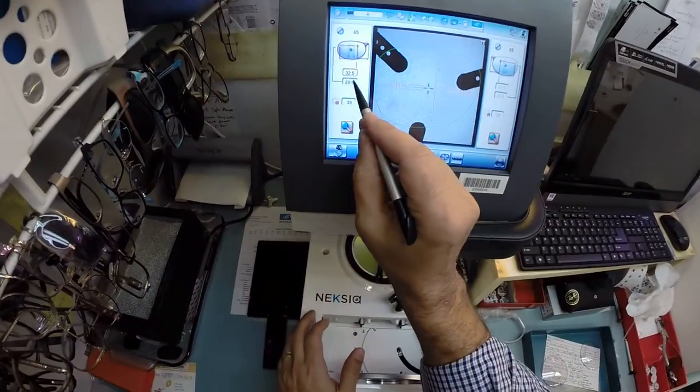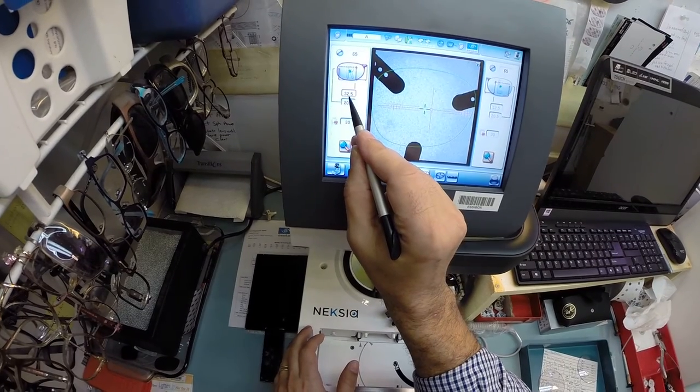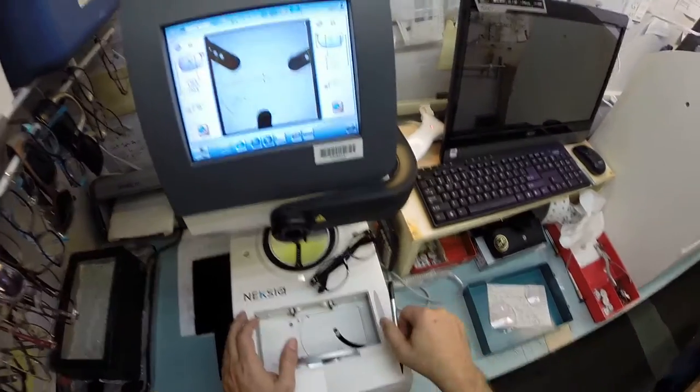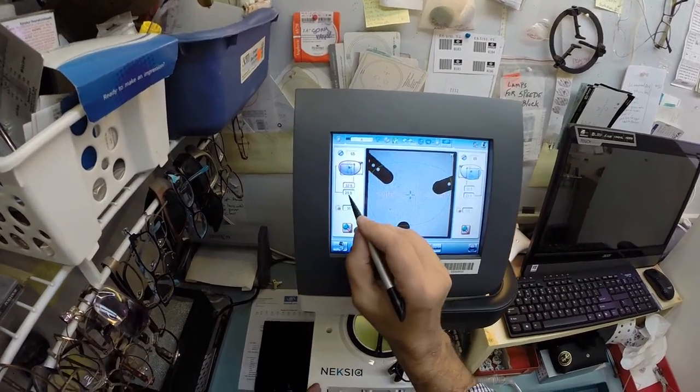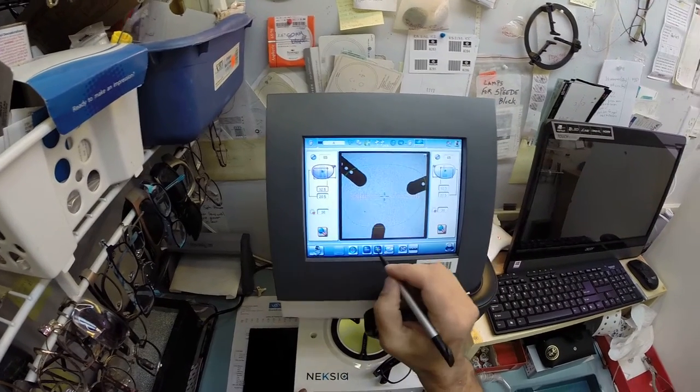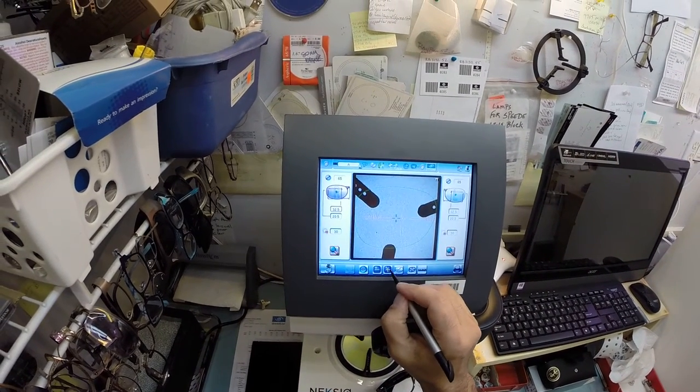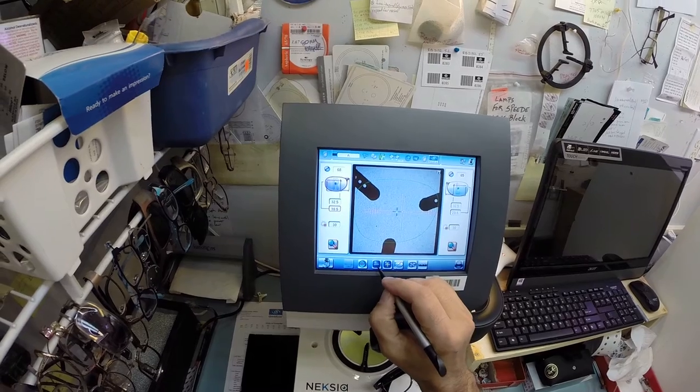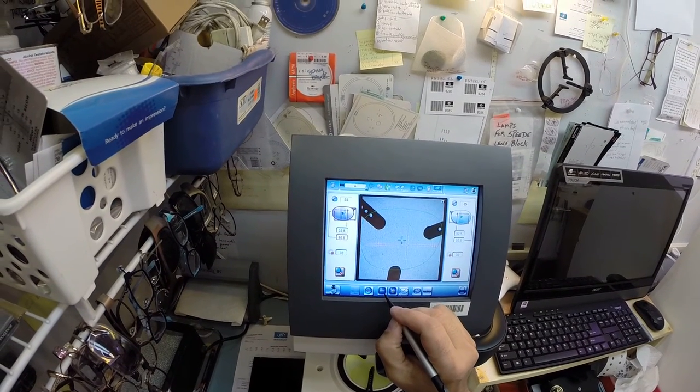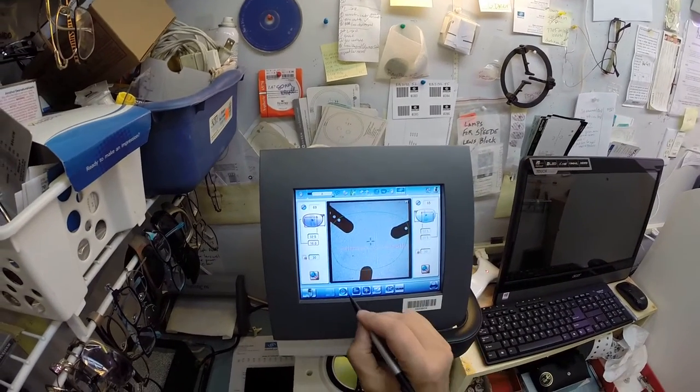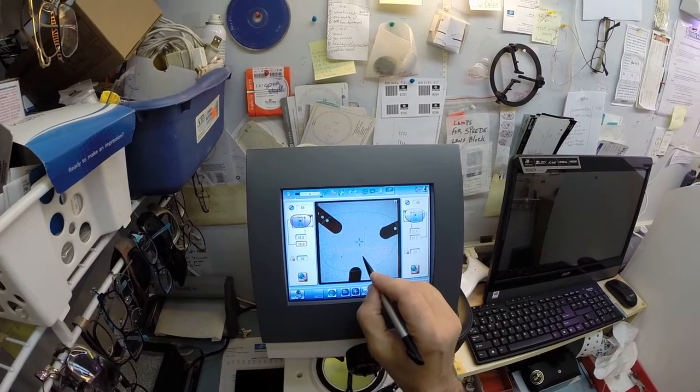It actually pops up the near distance. Your PD is 32.5 in both eyes and I'm actually going to go four below. Let me set your bifocal height there. We're going to go 16 and this is a bifocal so I'm going to put that in the graph there.